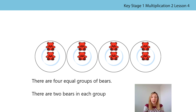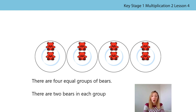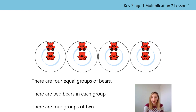Now I'm going to count my groups and the objects in them. One group of two, two groups of two, three groups of two, four groups of two. Can we do that again and you join in with me? One group of two, two groups of two, three groups of two, four groups of two. There are four groups of two. Can you say that sentence with me? There are four groups of two. Fantastic.